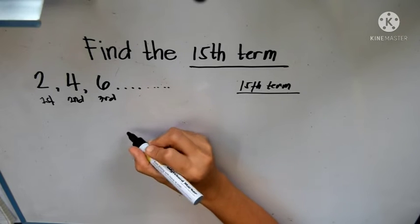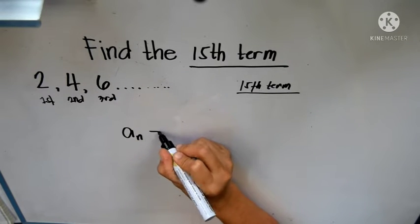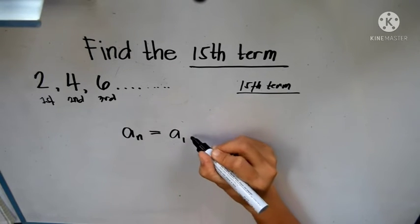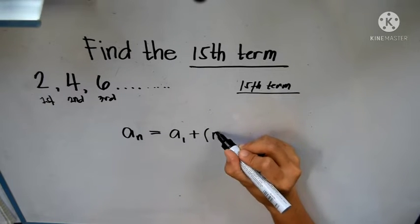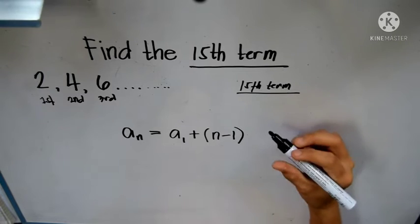Let's have the formula: a sub n equals a sub 1 plus open parenthesis n minus 1 close parenthesis d.